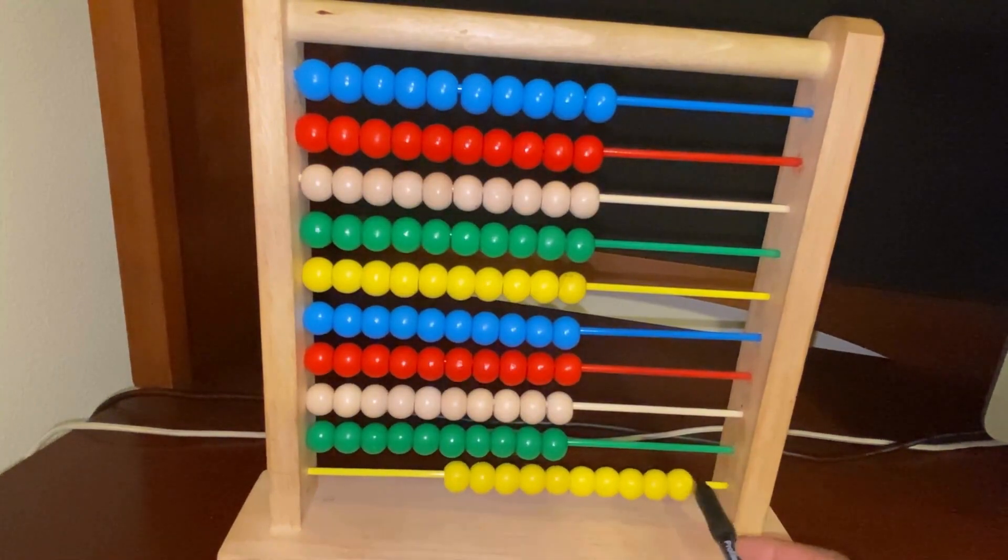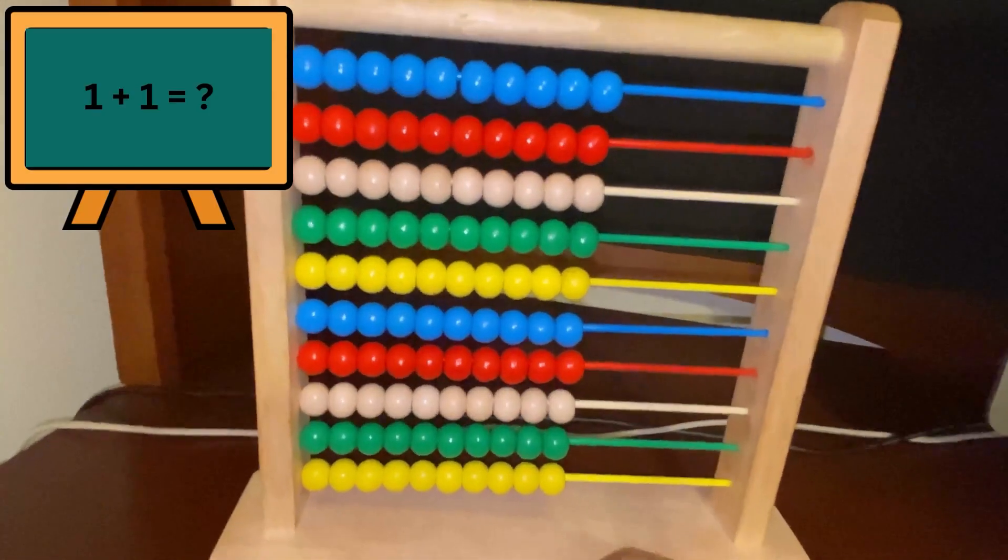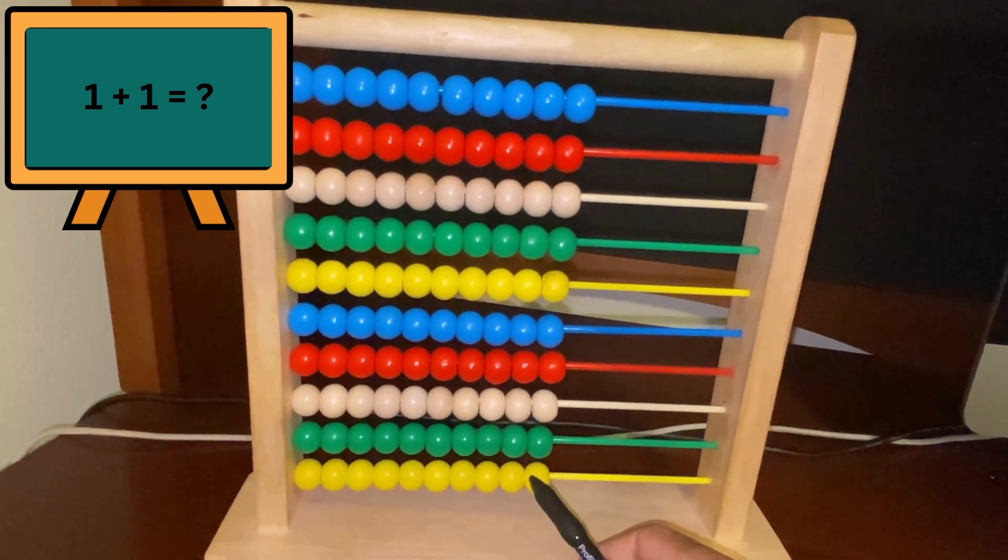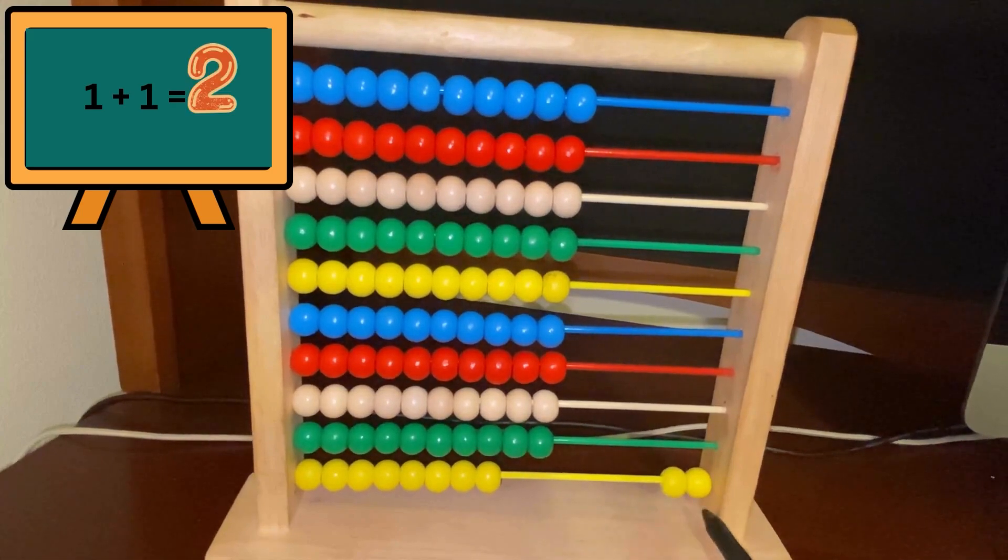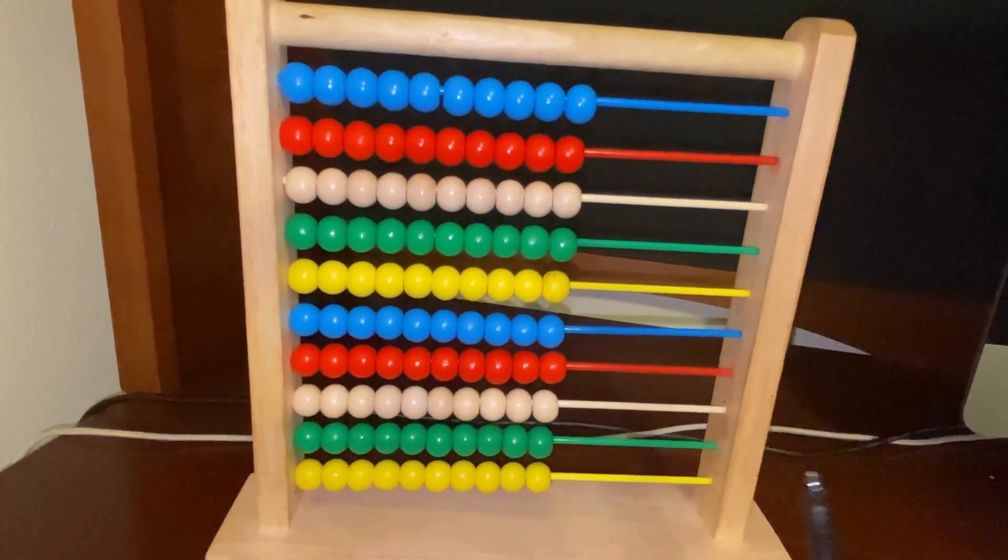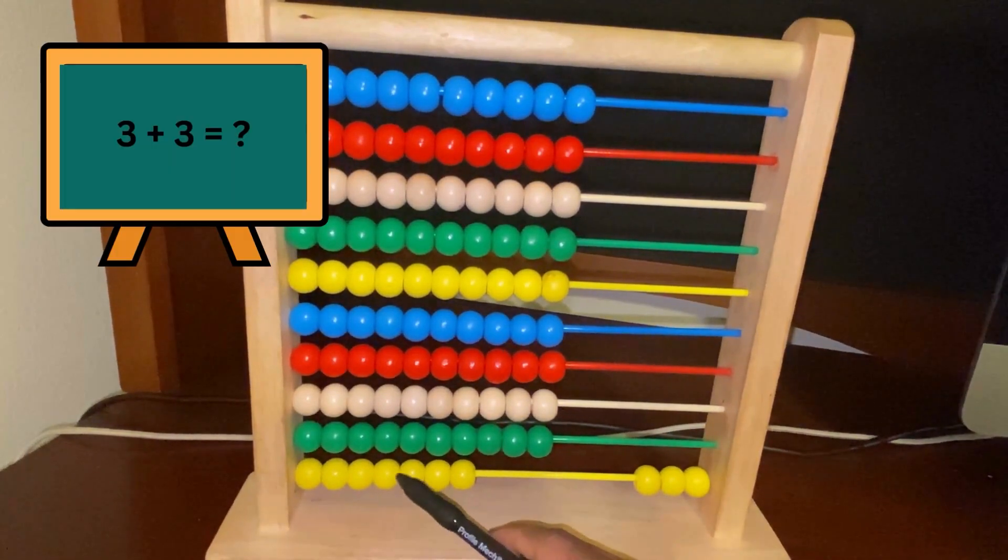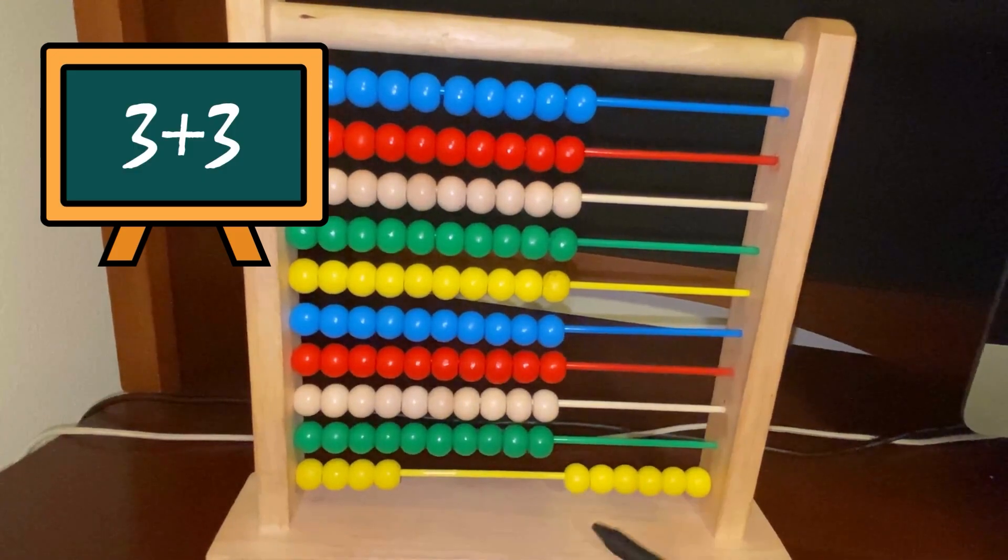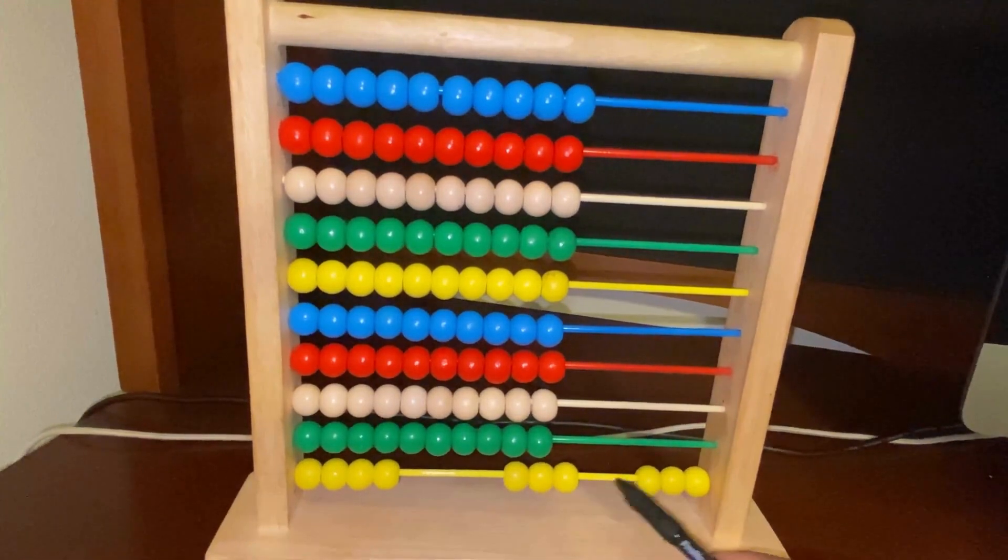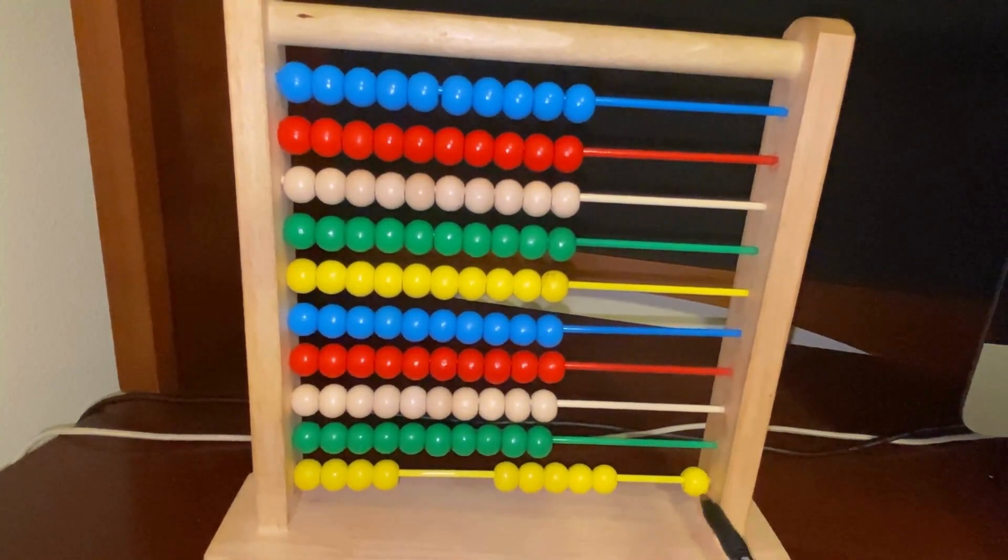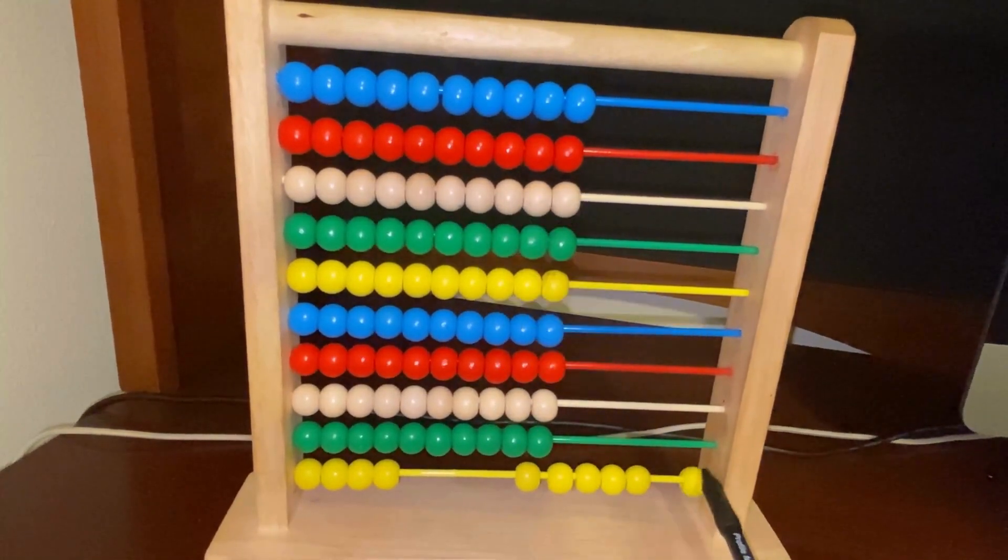We have ten down here. So let's say I want to know what one plus one is. What do we do? We will go over here. We put one plus one equals? Two. Great. Let's say I want to know what three plus three equals. Let's count. One, two, three, four, five, six. Great. So three plus three equals six.